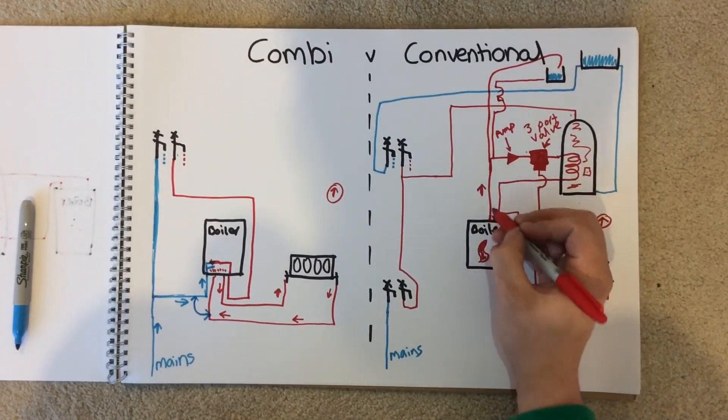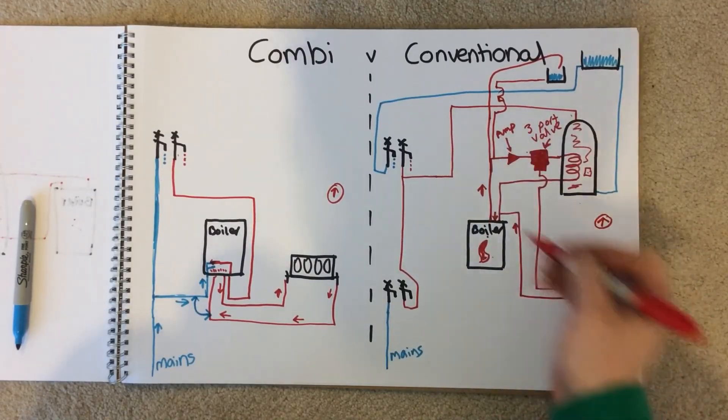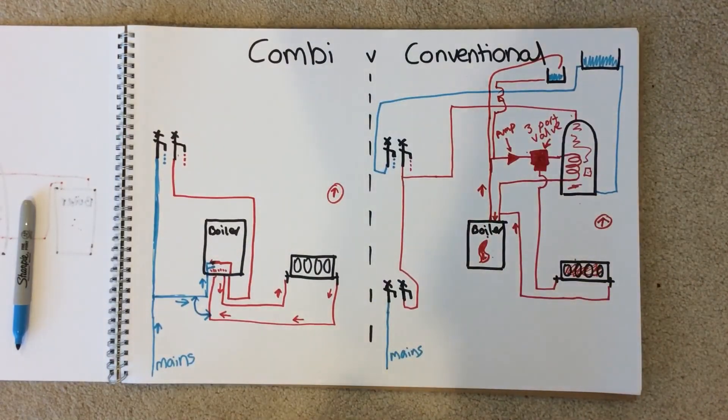Essentially, the boiler uses a pump and 3-port valve, goes to the radiator, back, and keeps going around. I hope this helps.